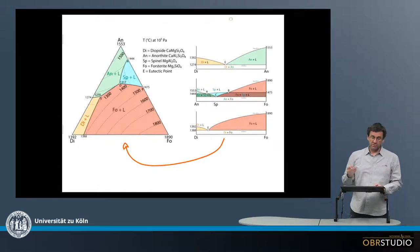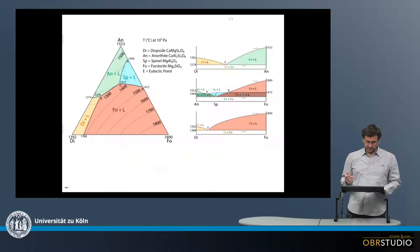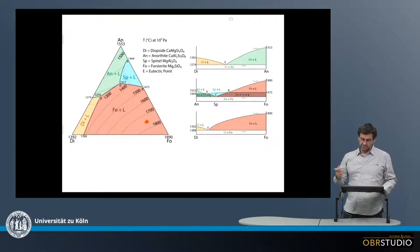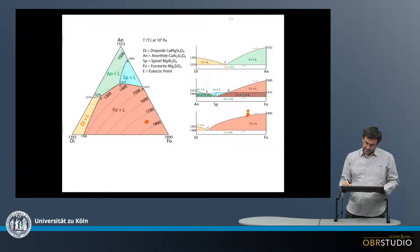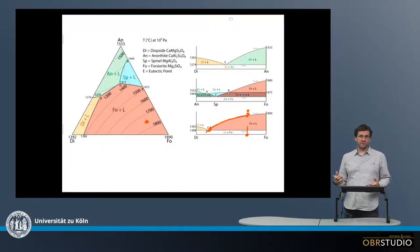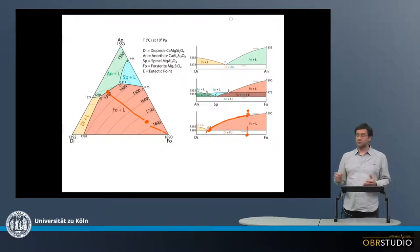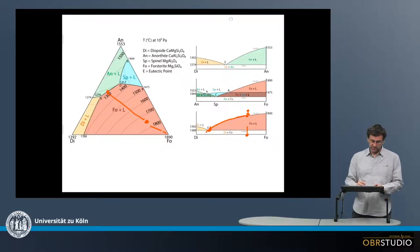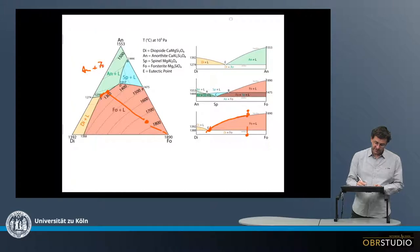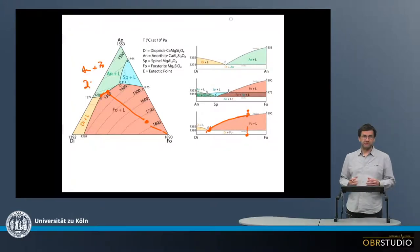Chondrules are forsteritic mafic systems, so they usually start in the primary phase field of forsterite, for example here. So in the binary, this would mean a chondrule might start here then cool down — this is the bulk composition — then the melt develops down the liquidus to the eutectic where diopside and forsterite crystallize. So in the ternary, this melt develops away from forsterite and hits this cotectic line where anorthite and forsterite form, and then it develops down the cotectic to the eutectic where anorthite, forsterite, and then diopside join the paragenesis.